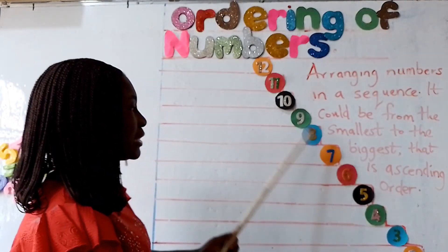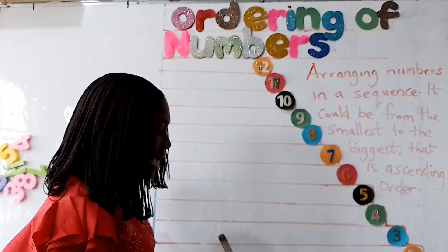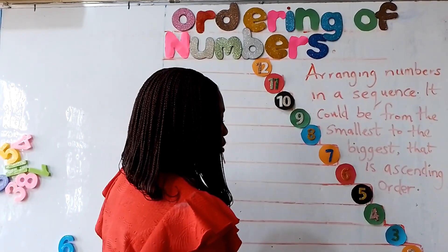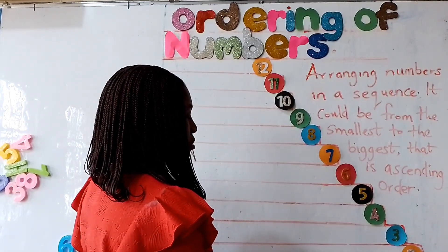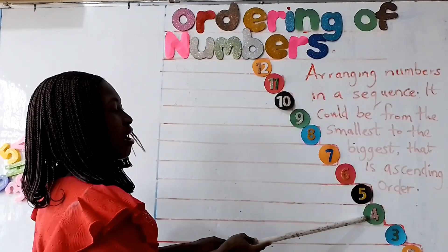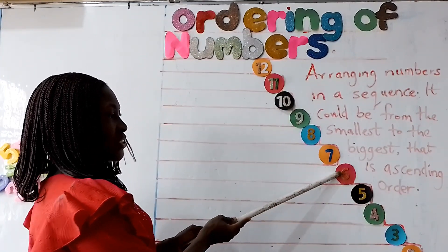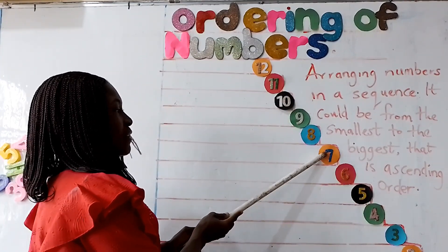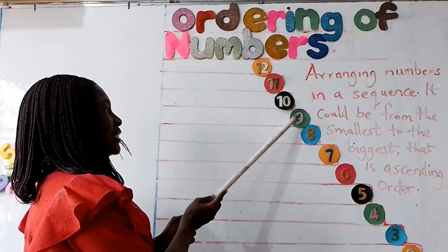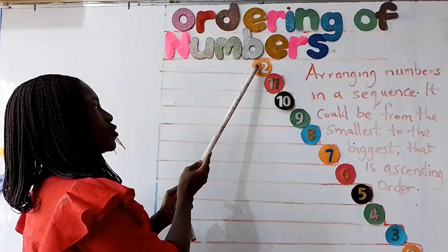Like what I have on the board. From the smallest to the biggest — it means from 1 to 12: 1, 2, 3, 4, 5, 6, 7, 8, 9, 10, 11, 12.